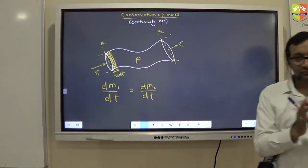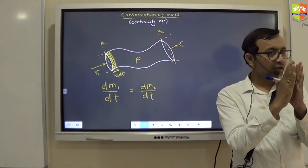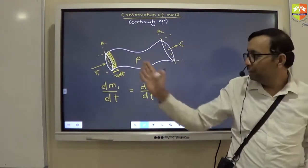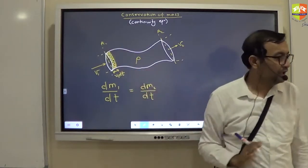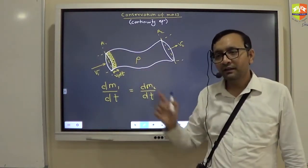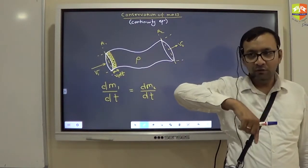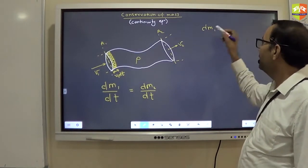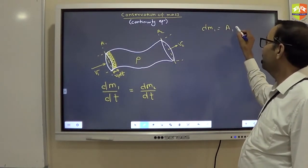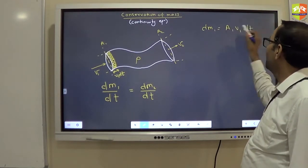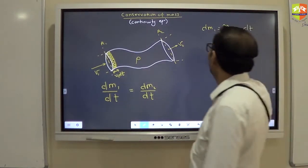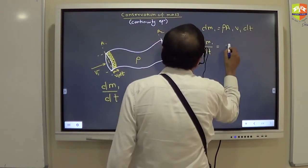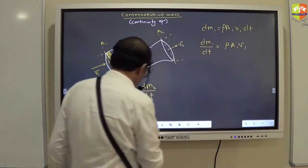A1 into V1 dt. It is like a cylinder. It is like a very thin cylinder. The area of cross section into height is the volume. So, volume that has entered is area A1 into V1 dt. So, mass will be that into rho. So, dM1 which has entered in dt time is A1 V1 dt into rho. So, I am getting dM1 by dt is equal to rho A1 V1.